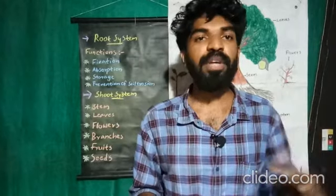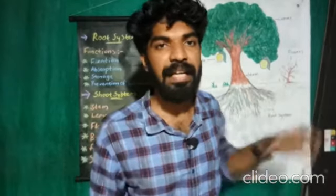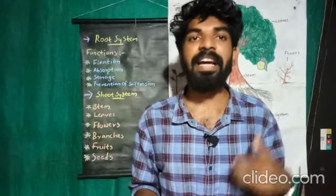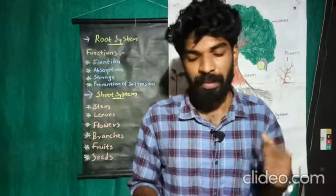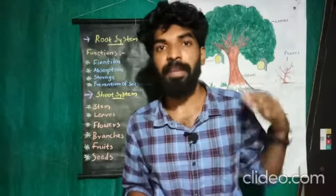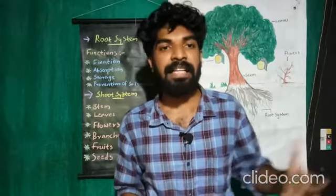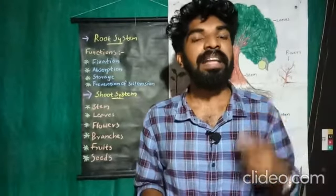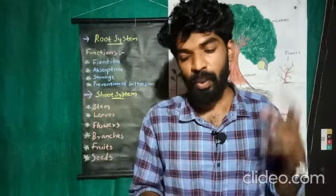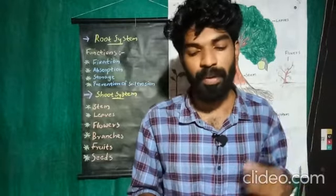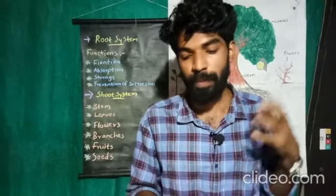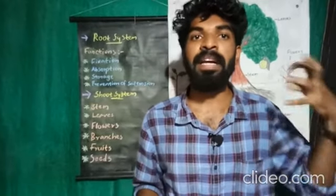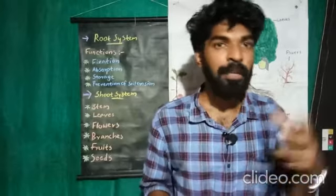For example, radish and beetroot are roots where food is stored. That is why we use radish and beetroot. The last function is prevention of soil erosion. Roots prevent soil erosion by holding the topsoil together tightly.